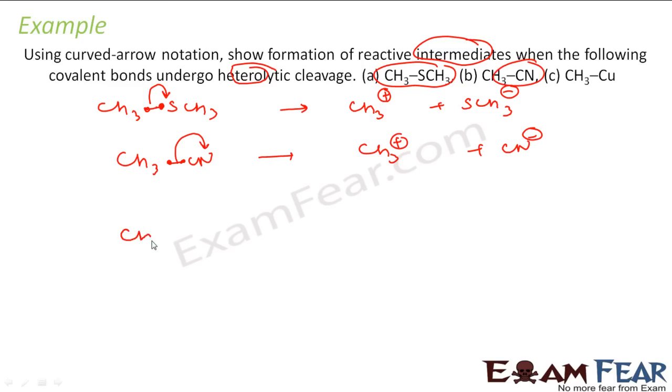Next is CH3-Cu. So out of CH3 and Cu, CH3 is more electronegative here. So CH3 will take both the electrons. So this guy will become CH3- and Cu+. Correct?